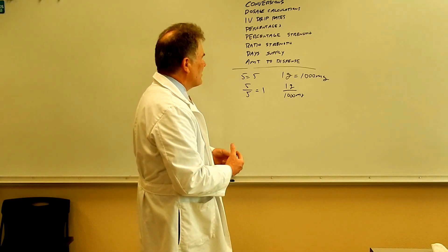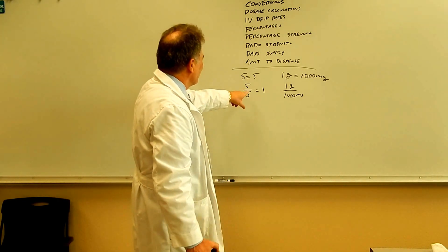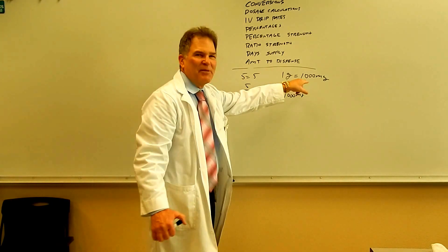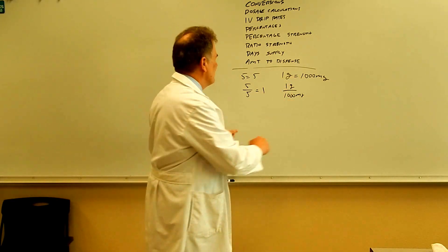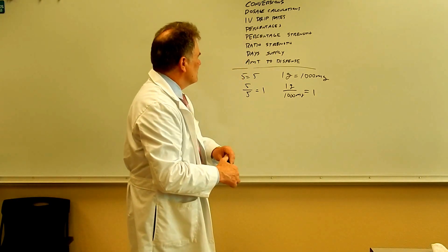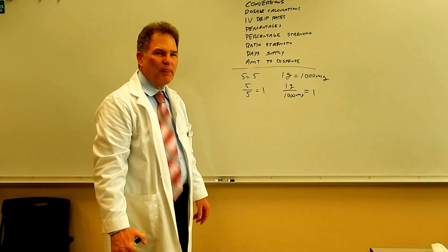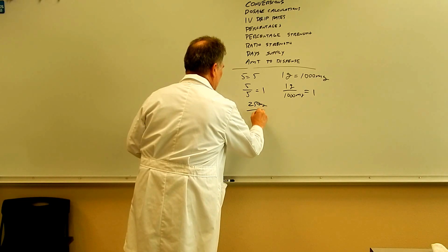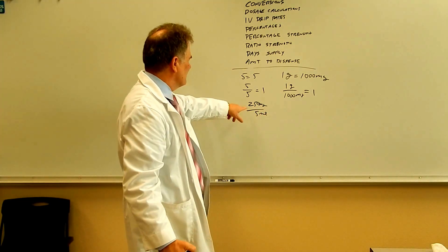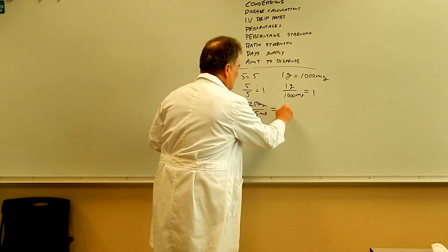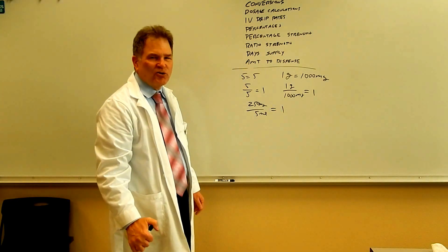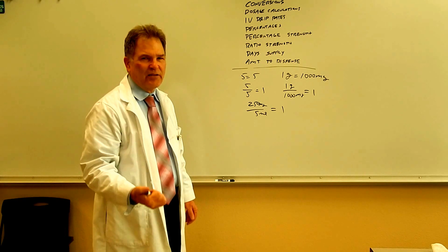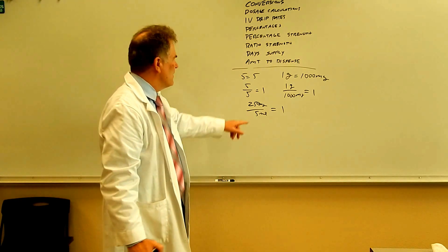Back after that interruption. So we have five divided by five equals one. We can do the same thing — one gram divided by a thousand milligrams also equals one. Now suppose we had some amoxicillin suspension that was 250 milligrams per five mLs. You might say, how in the world does that equal one? Well, it does — it equals one for that problem. There's not always 250 milligrams per five mLs, but if the problem says that the strength is 250 milligrams per five mLs, then it equals one.